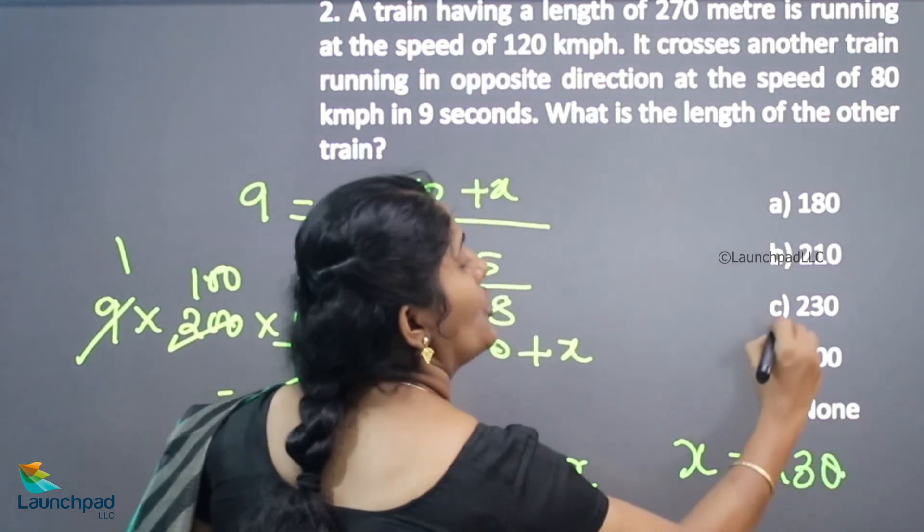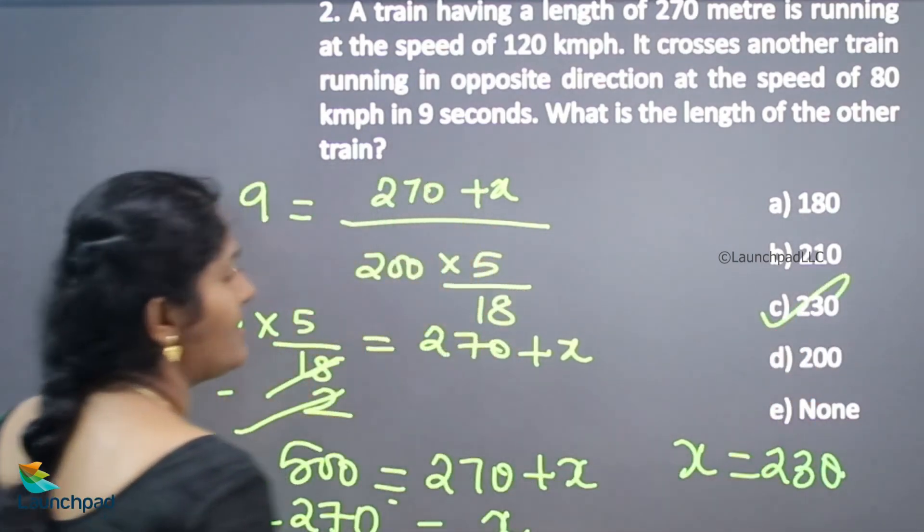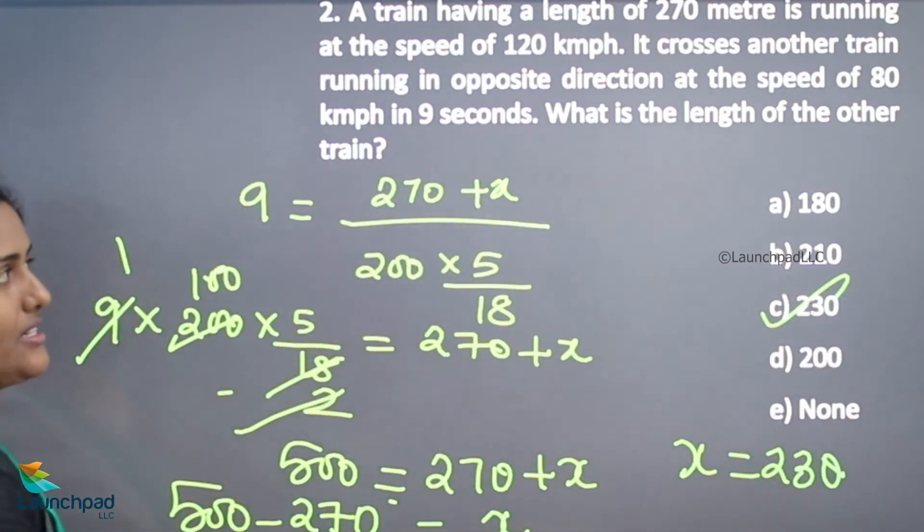So option C is correct. This is the example of how we can calculate the unknown data by means of two trains crossing each other in opposite directions. Thank you for watching.